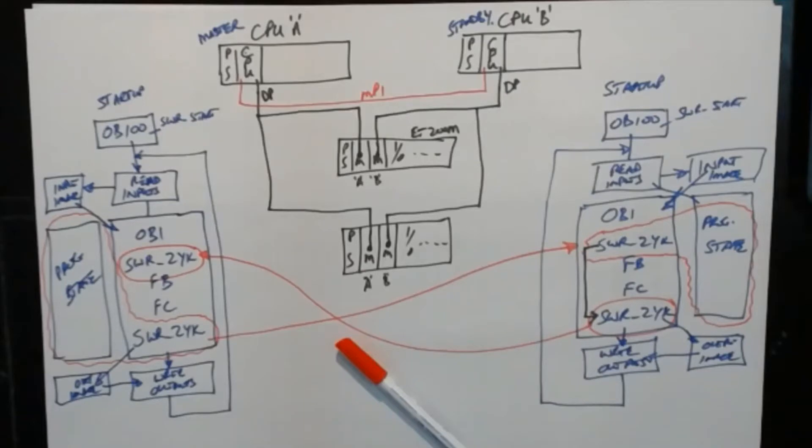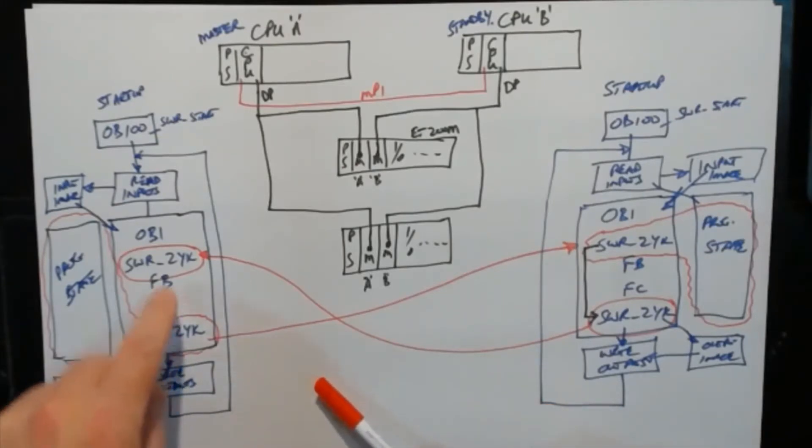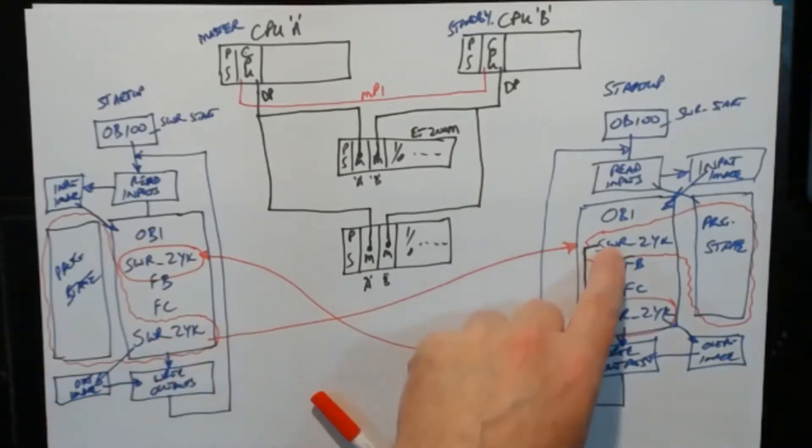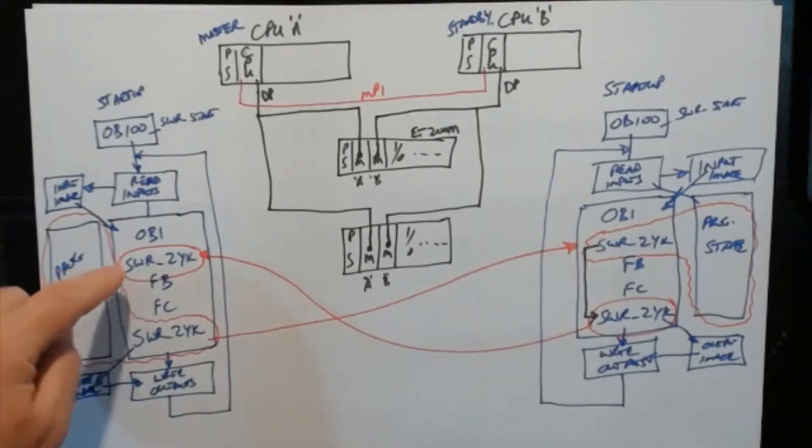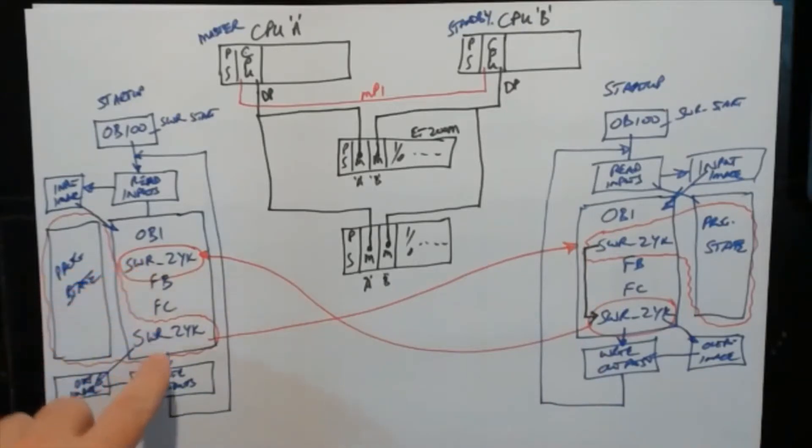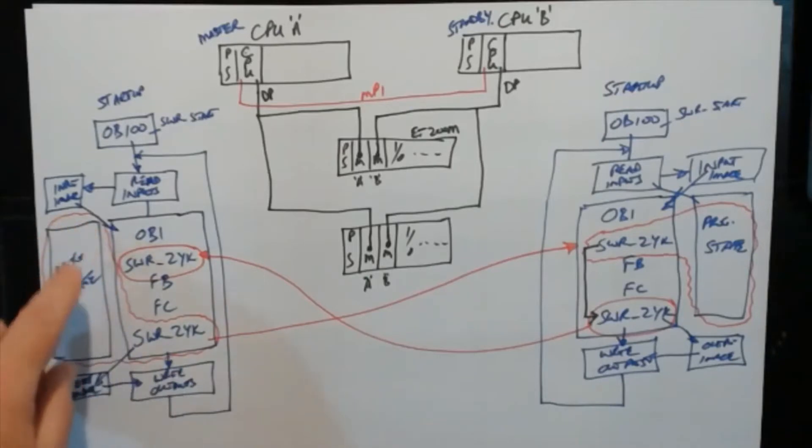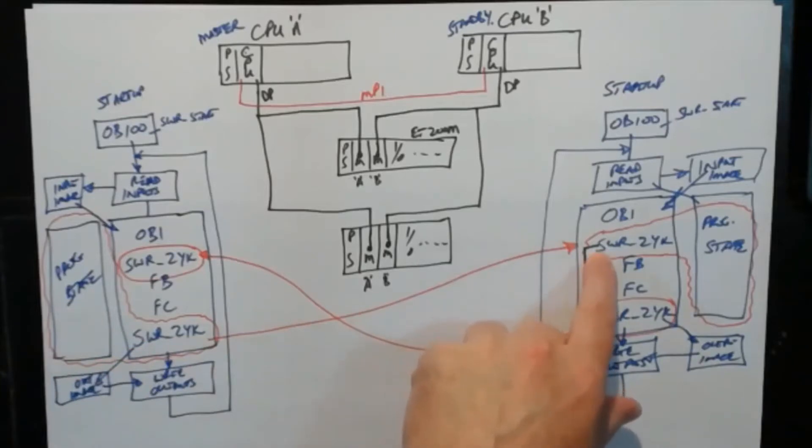Where we left off last time, we'd seen that the software is being updated on a regular basis when the master runs through its program, completes the program, and then sends the information over to the standby PLC. The master PLC has to run through the entire program first and update their program state before the information is sent to the standby CPU, which means that the standby CPU is never completely up-to-date with the master PLC. It's always at least a couple of cycles behind.